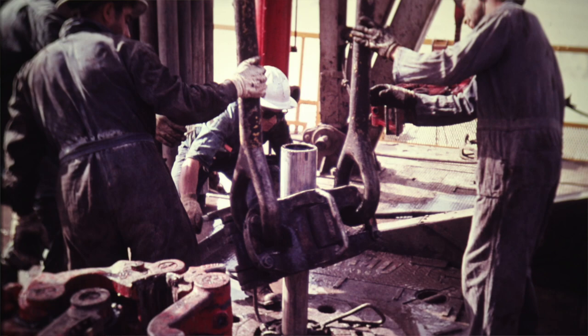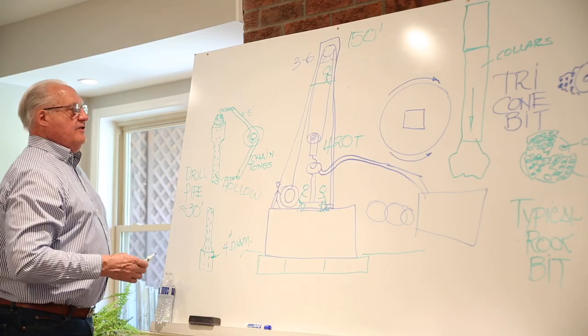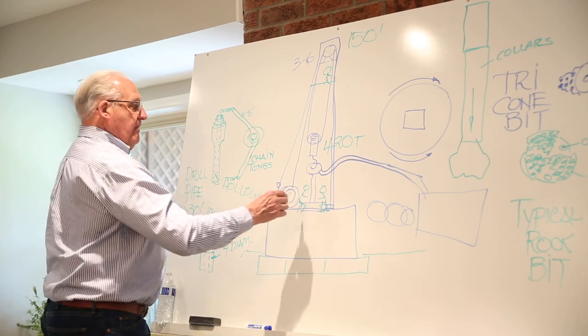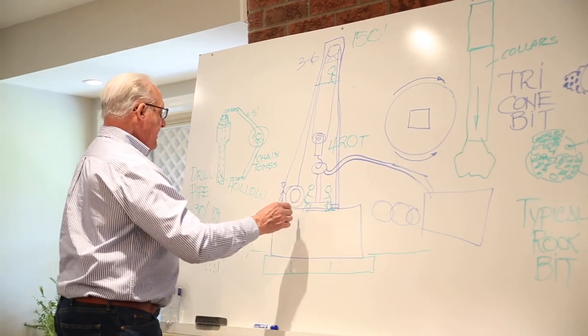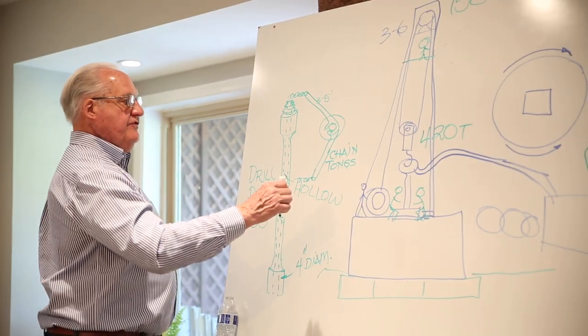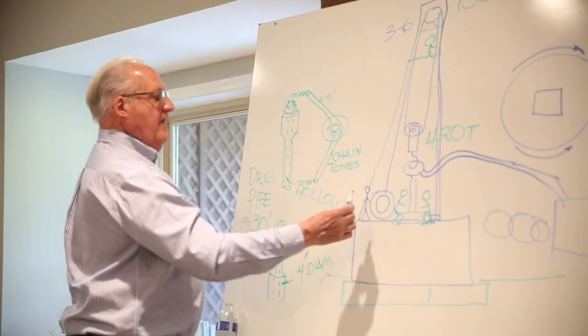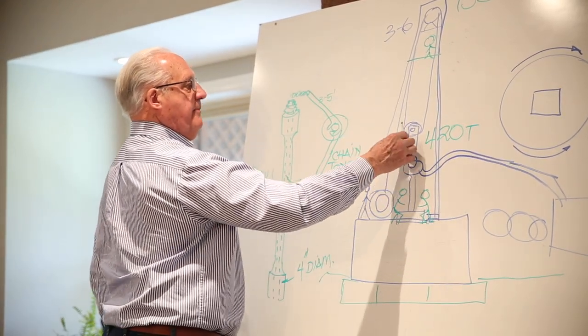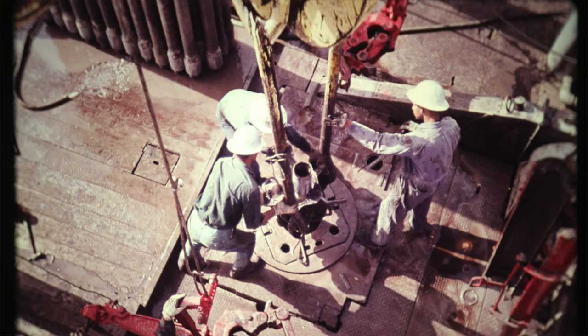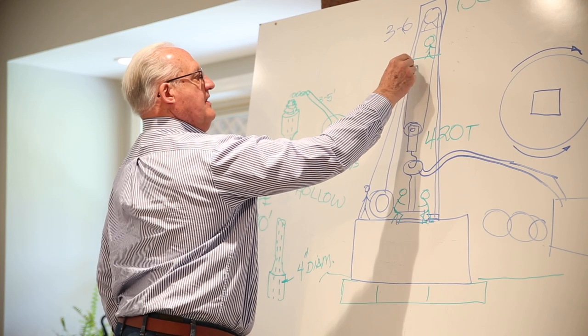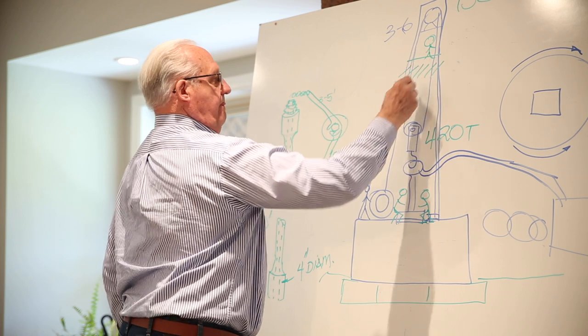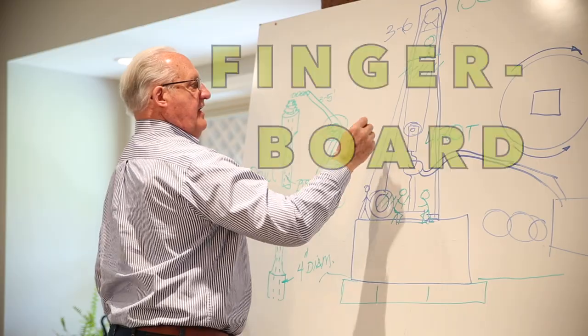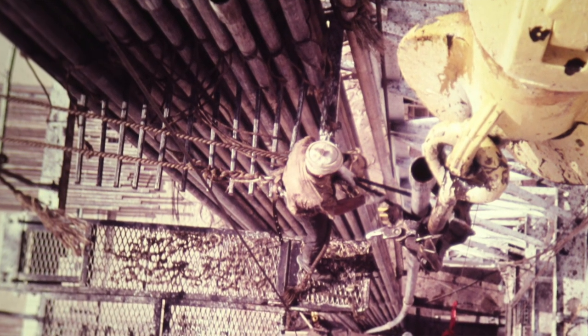Okay, so these two guys are responsible to put together the pipe sections, to take apart the pipe sections. So let's suppose they're coming out of the hole. When they come out, these two guys unscrew a 90-foot section, and then they place that 90-foot section—it's vertical, it's being pulled up by the traveling block.